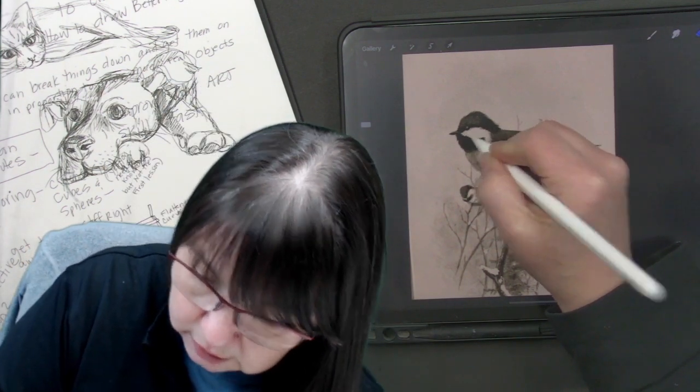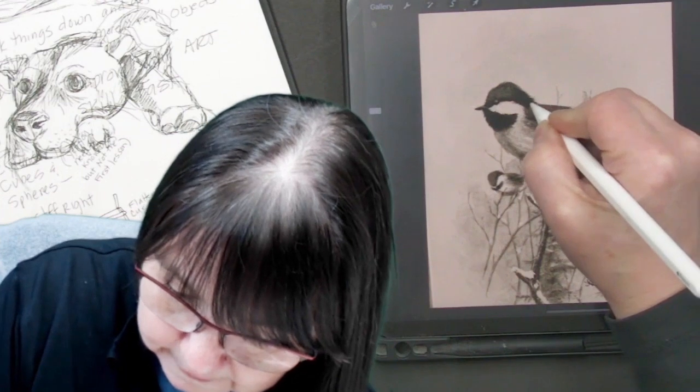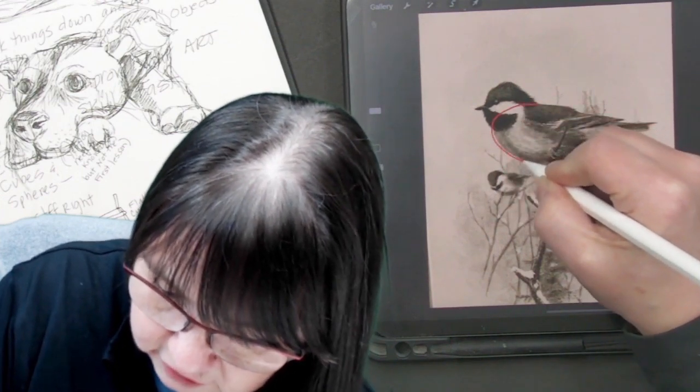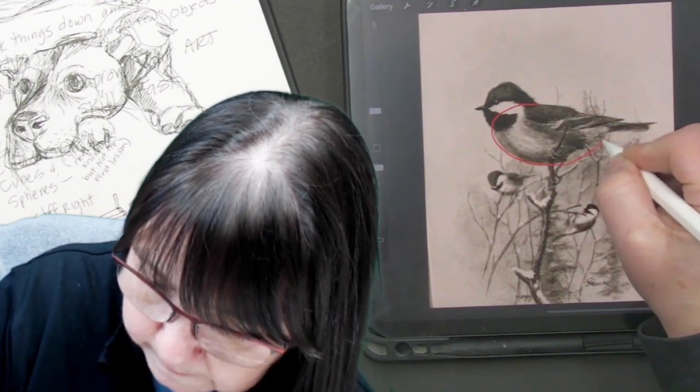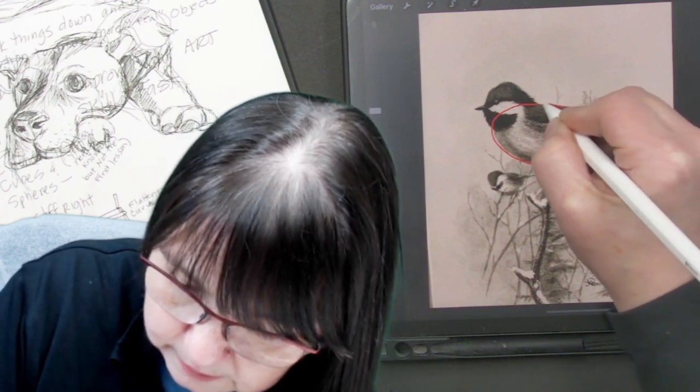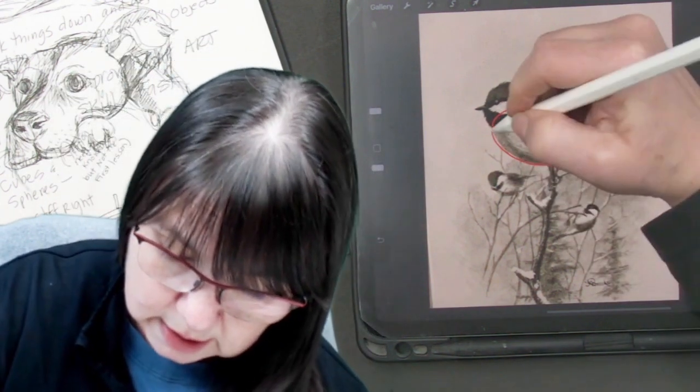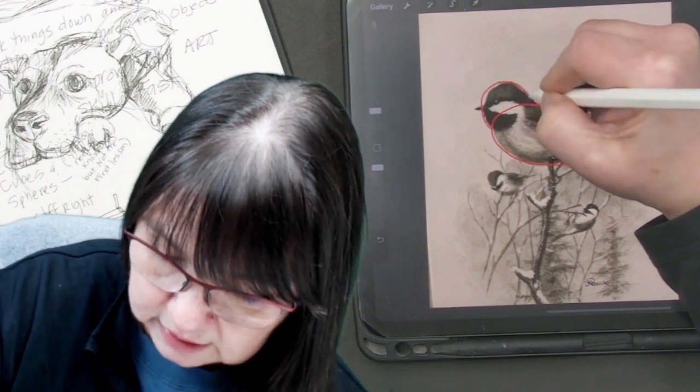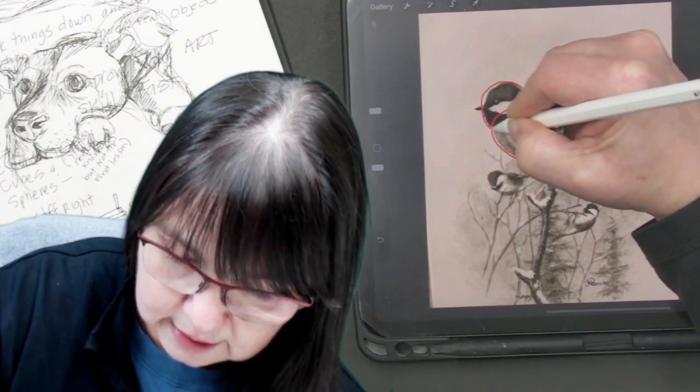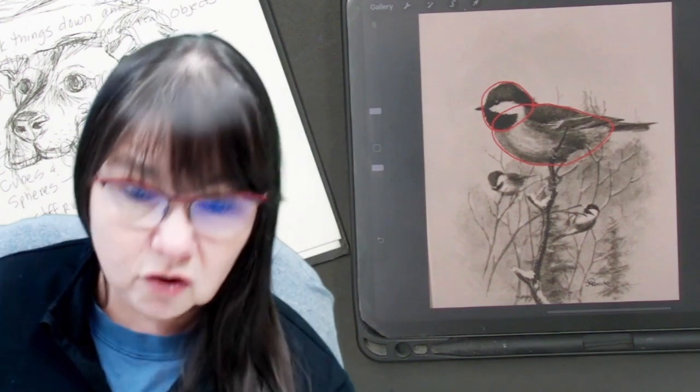This is the shape that I see. It's basically an egg shape. This is the shape that I see, basically a circle.